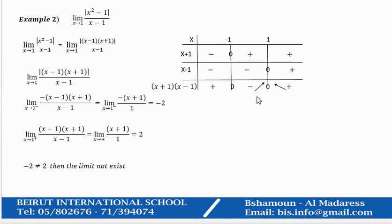Approaching one from the left means x plus one times x minus one is negative. So its absolute value is minus times x minus one times x plus one.